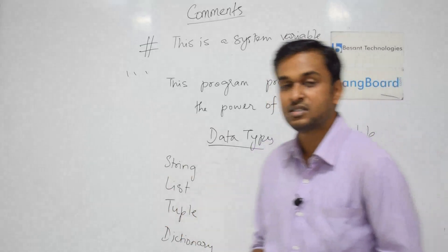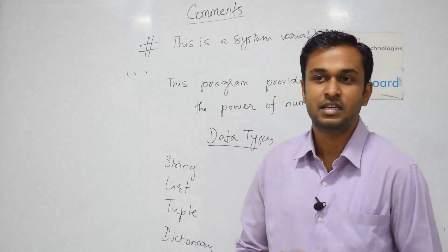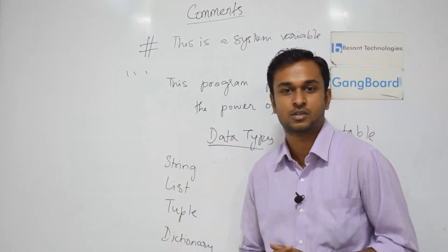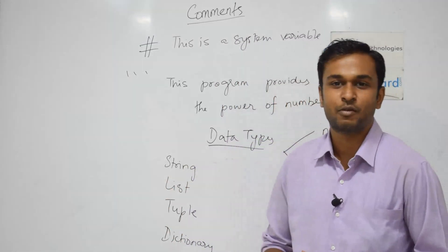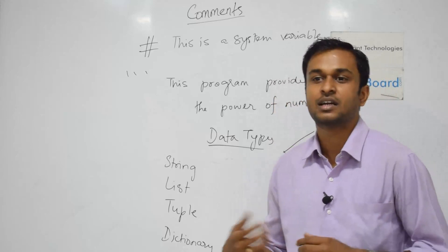Next one is list. List is a collection of items, just like C or Java array concept. In array concept, we can have only a single data type with a collection of items.